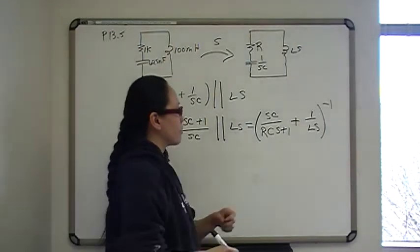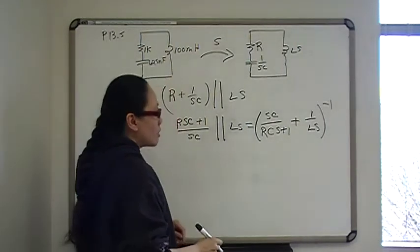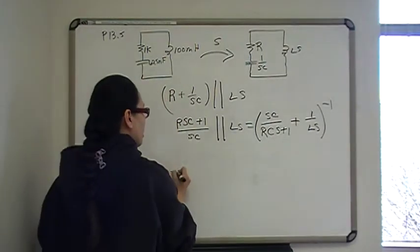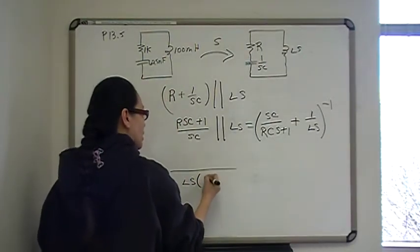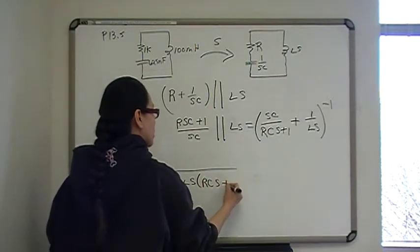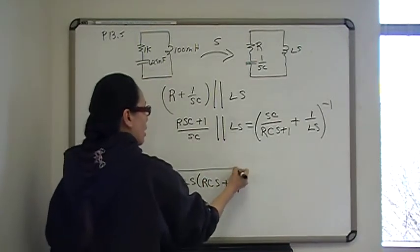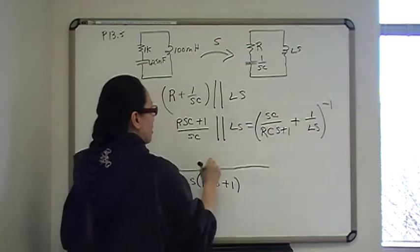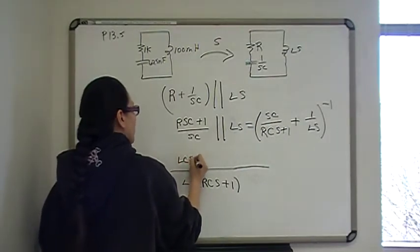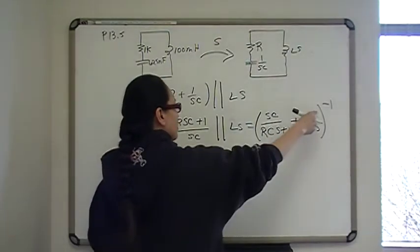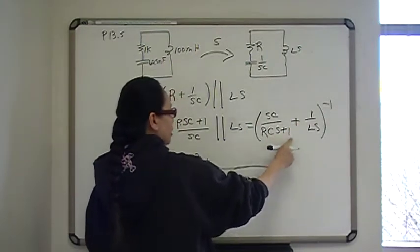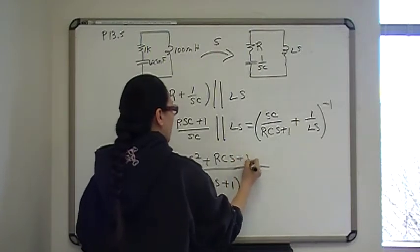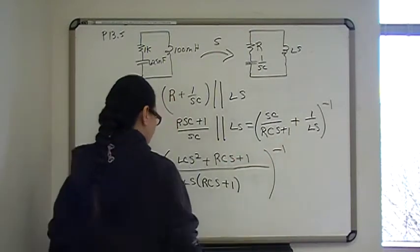So now we need to combine and find a common denominator. The common denominator is going to be LS times RCS plus 1. So that's going to be the common denominator, RLS times RCS plus 1. In the numerator, this fraction is missing an LS, so that's going to be SC times LS, so that's going to be LCS squared. And this one here is missing RCS plus 1, so that's going to be plus RCS plus 1.